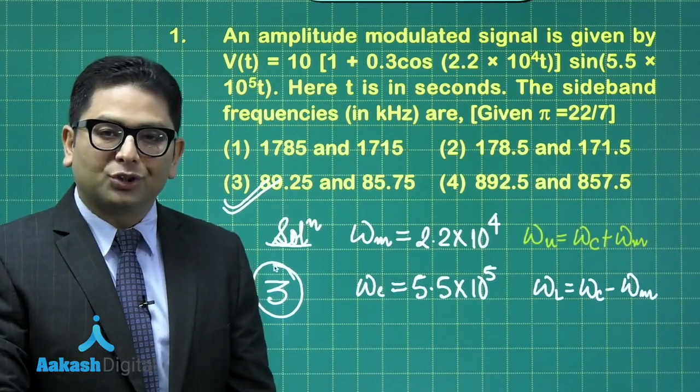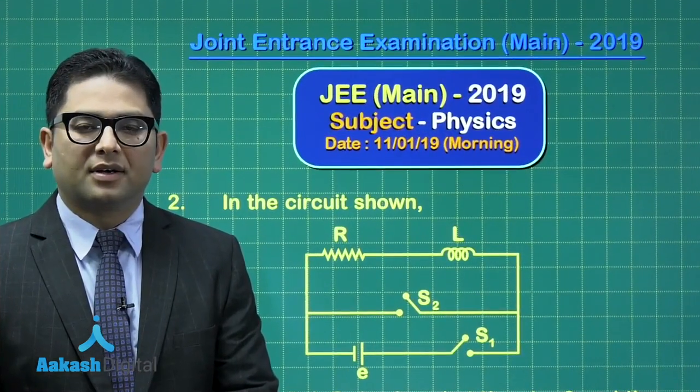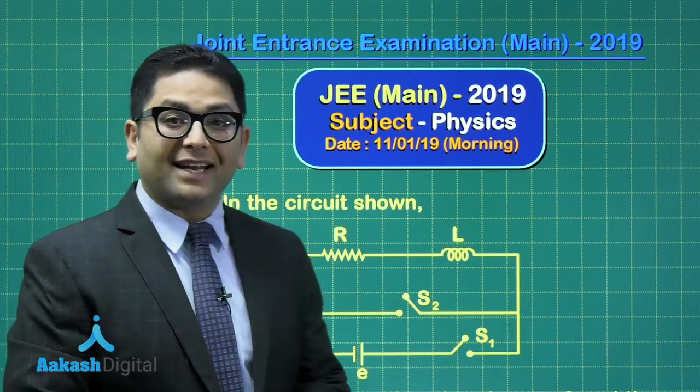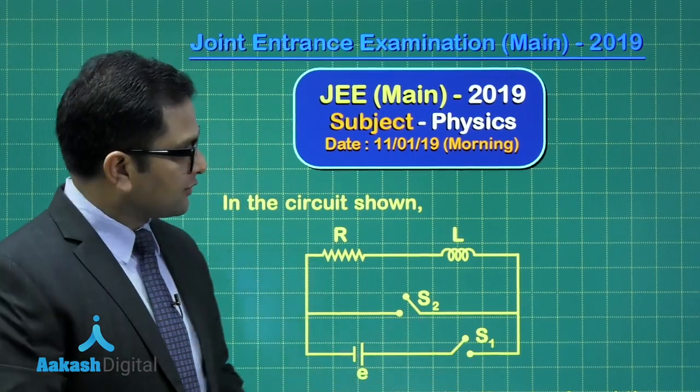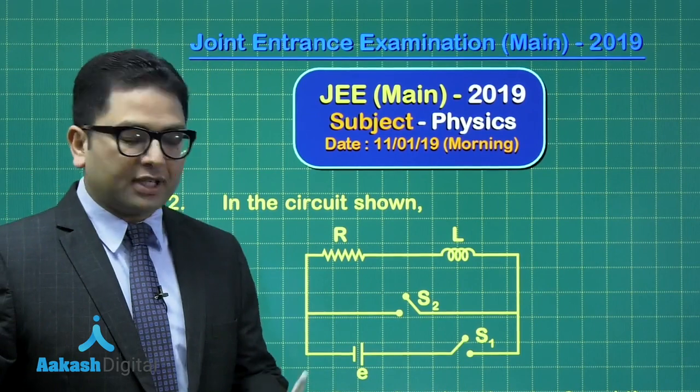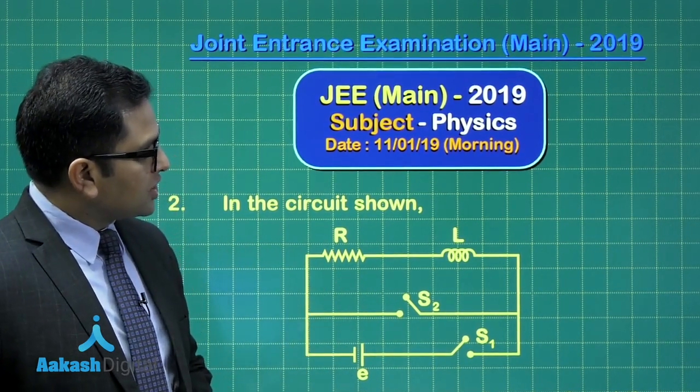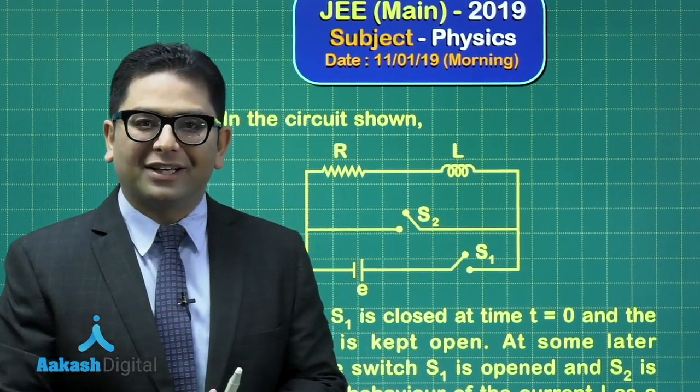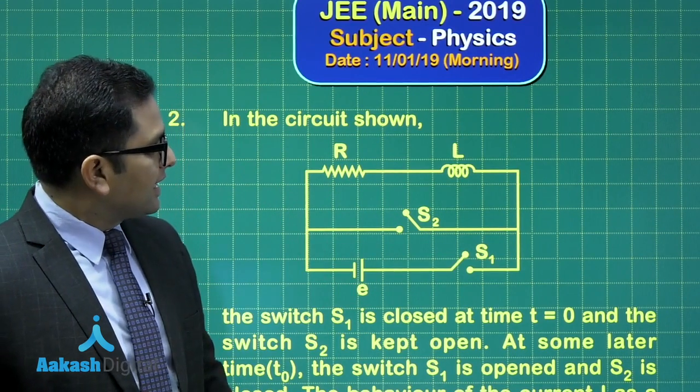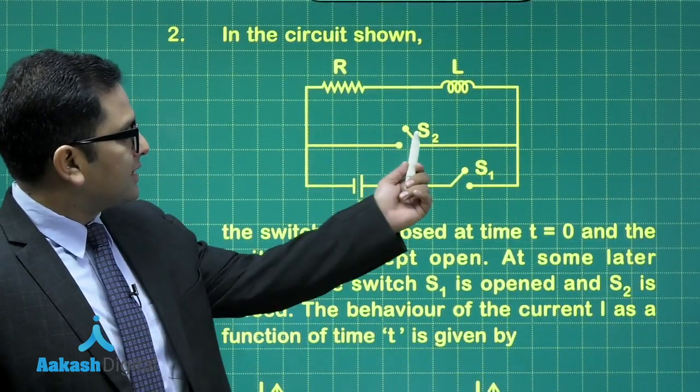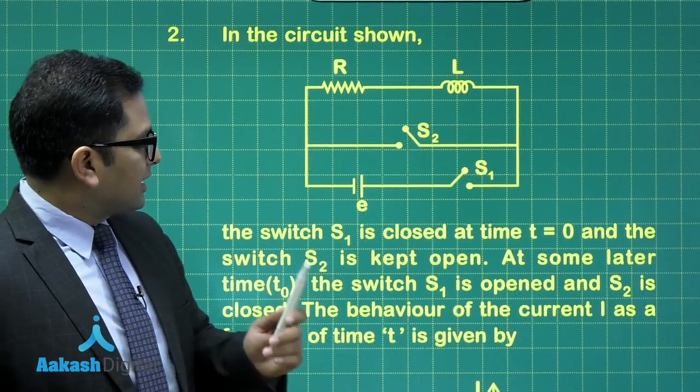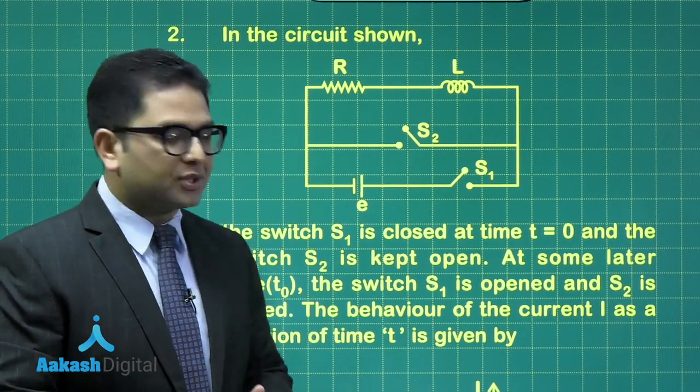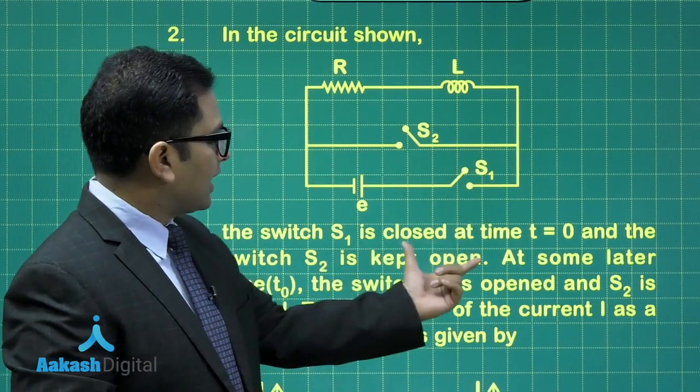Alright, now let's move to the second question. Question number 2. That has been derived from the topic of RL charging and discharging circuit, of course, from electromagnetism. And in this particular figure, as I proceed, you would see the question has been raised involving both the situation, the charging as well as discharging. So what is the question? Let's try to see. Here is an RL circuit and you could see that there is S2 and there is another switch which is S1. And the question says this switch S1 is closed at time t equals to 0. So that means initially S1 is closed while S2 is open.